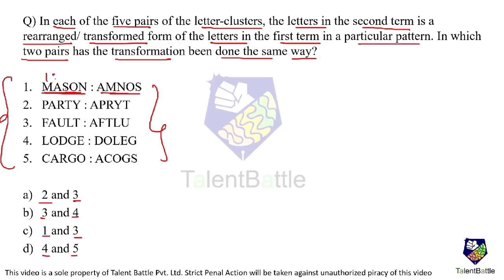Let me give numbers: one, two, three, four, five. Now, A is in the second position and came first, so two came first. Then M is in the first position, so one. Then N which is five, then O which is four, then S which is three. That means the rearrangement happened like two, one, five, four, three.